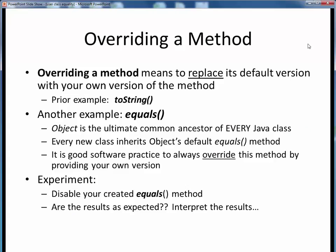When we talked about display methods in an earlier lecture segment, we said that overriding a method means to mask or replace its existing default version with your own version of that same method. And one example we saw of this was toString.